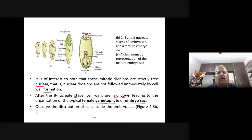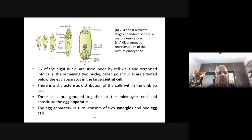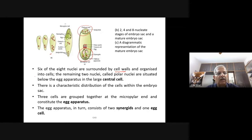Observe the distribution of cells inside the embryo sac. You can see three antipodal cells, two synergies, one egg cell, and a central cell with two polar nuclei. Six of the eight nuclei are surrounded by cell walls and organized into cells — three here at one end, three at another.